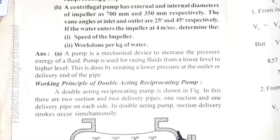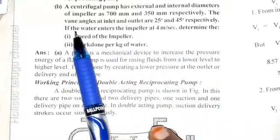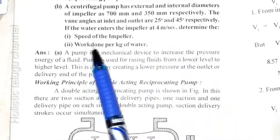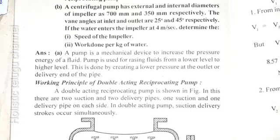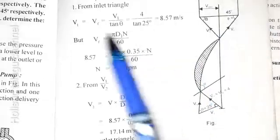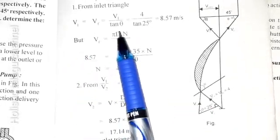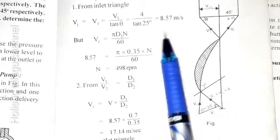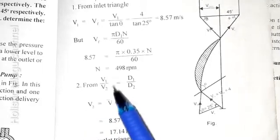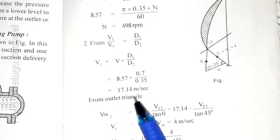A centrifugal pump has external and internal diameters of the impeller: 700 mm and 350 mm respectively. The vane angles at inlet and outlet are 25° and 45° respectively. If water enters the impeller at 4 m/s, determine the speed of the impeller. From the velocity triangle: V1 = VF1 = 4 m/s. u1 = VF1 / tan(25°) = 4 / tan(25°) = 8.57 m/s. Using u1 = πDN/60, N = 498 rpm. Then u2 = u1 × D1/D2 = 8.57 × 0.7/0.35 = 17.14 m/s.